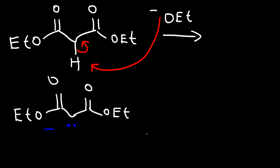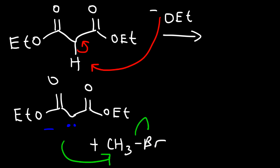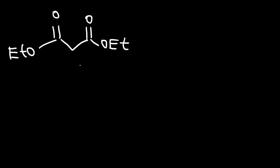Now the next thing we need to do is react it with an alkyl halide — let's use methyl bromide. So now we have this molecule. If we want to, we can add two R groups, but for this example, I'm just going to add one.